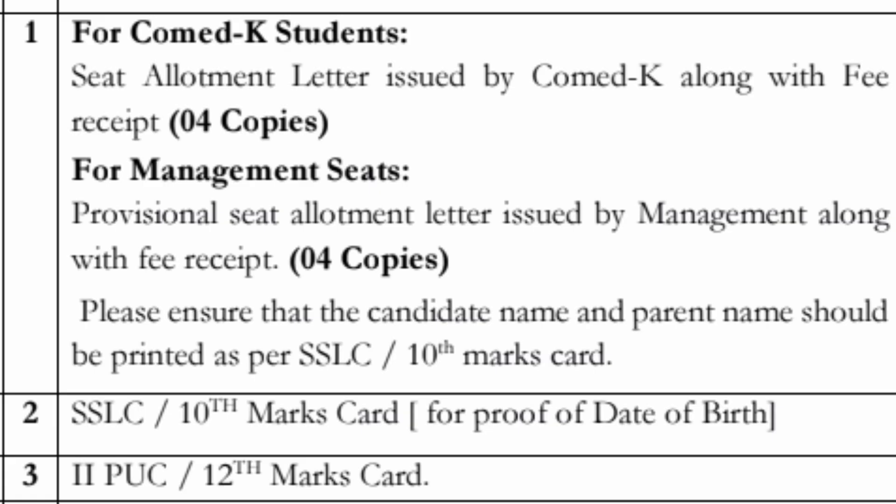Now for COMED-K students during physical reporting, the document set is almost similar. For COMED-K students it will be called the COMED-K seat allotment letter — bring the original and four copies. If you are coming through management quota, bring the management allotment letter. Then the same SSLC 10th marks card as proof of birth, and the second PUC or 12th marks card from any board — CBSE, ICSE, or outside Karnataka boards.